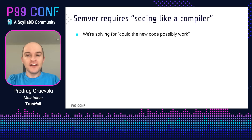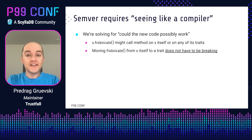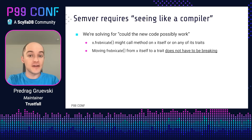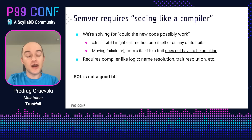It turns out that handling semver in a way that doesn't cause false positives everywhere requires seeing like a compiler, because we have to solve for: could the new code possibly work? For example, say a method got removed from some type. It's possible this isn't a breaking change — the method might have moved to a trait that that type also implements. Correctly handling this case requires compiler-like logic. We have to implement algorithms like trait resolution, name resolution, and so on. And that makes SQL not a great fit. Even if we ran a complex ETL pipeline, the size of the resulting tables would mean that all hope of good performance goes out the window.